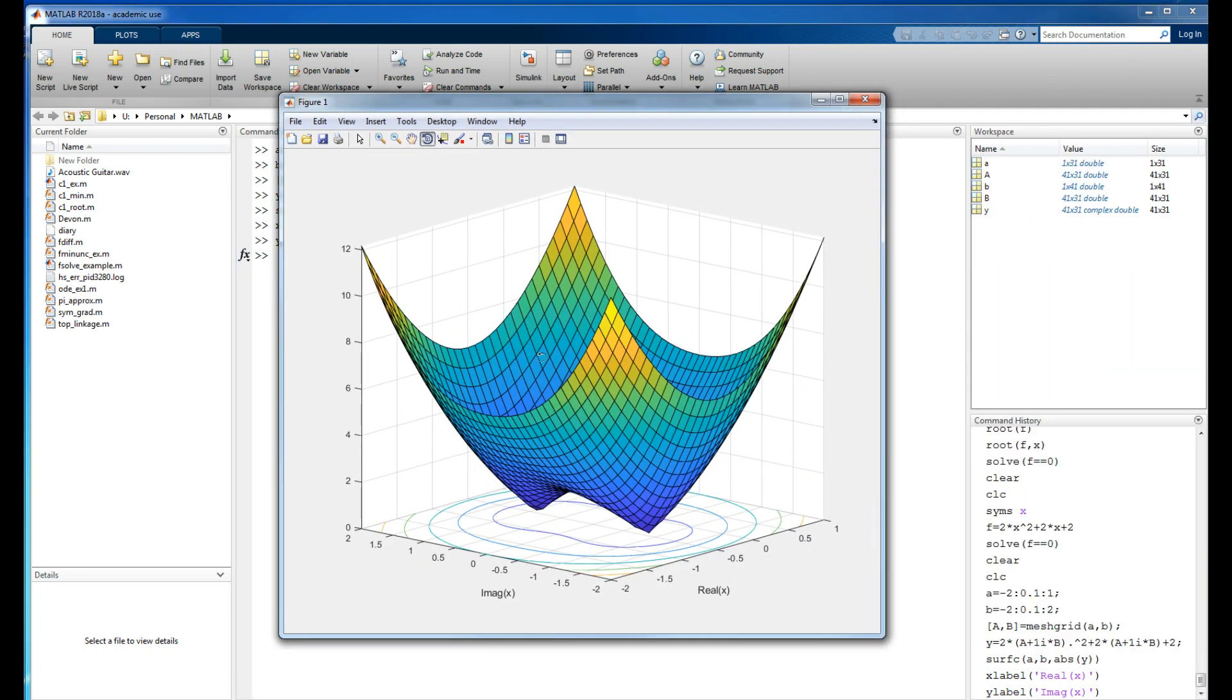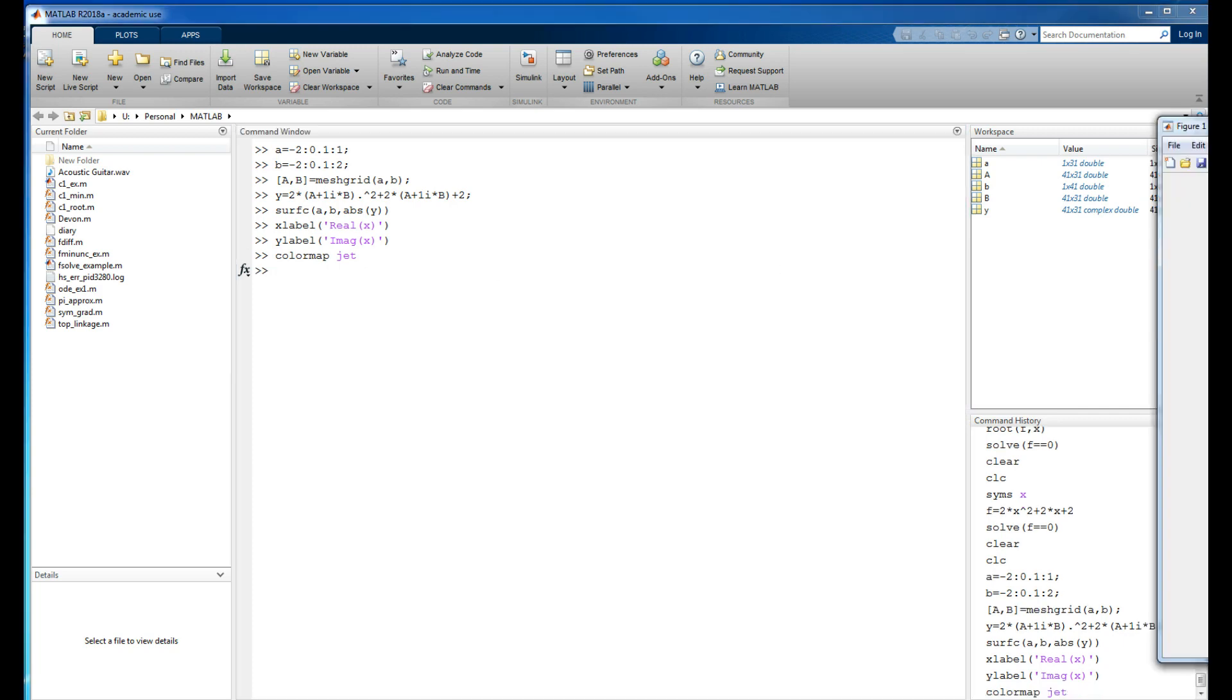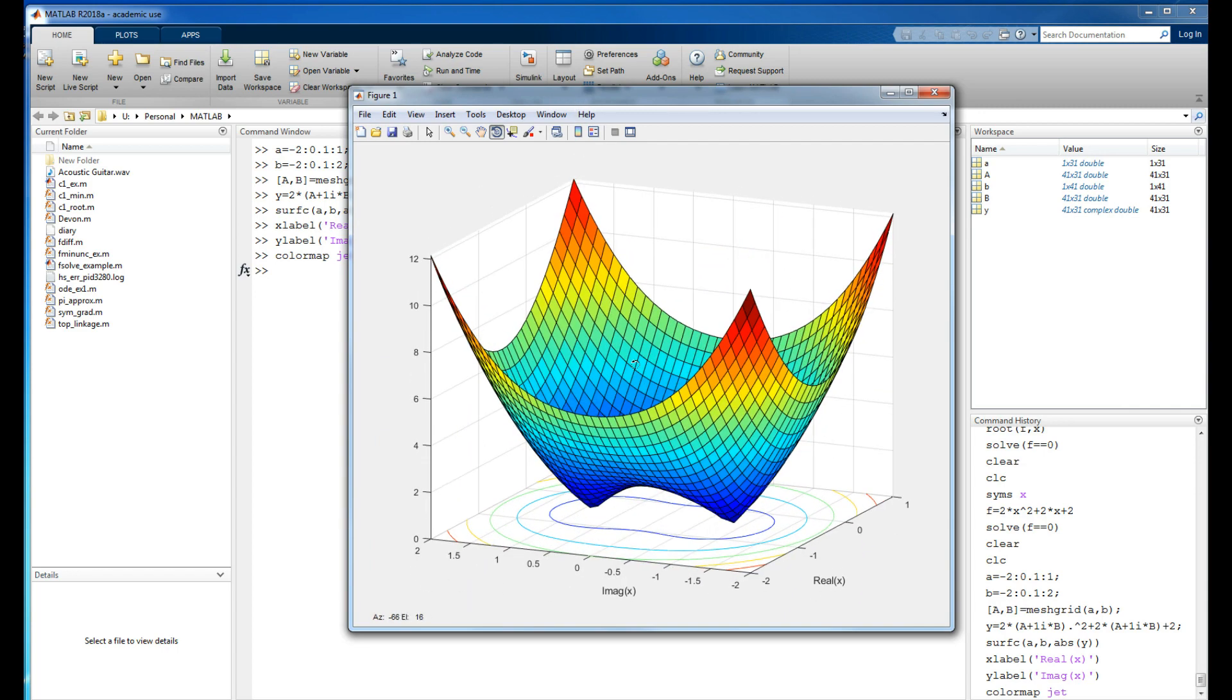There it is. I'm not a big fan of this color map—this is the default. I like a brighter one. I'm going to use colormap jet, which uses bright primary colors. That makes it easier for me to look at. There's lots of different color maps; pick whichever one you want.